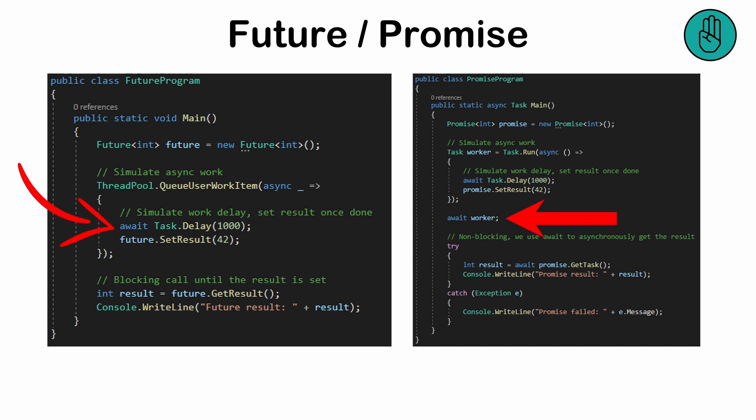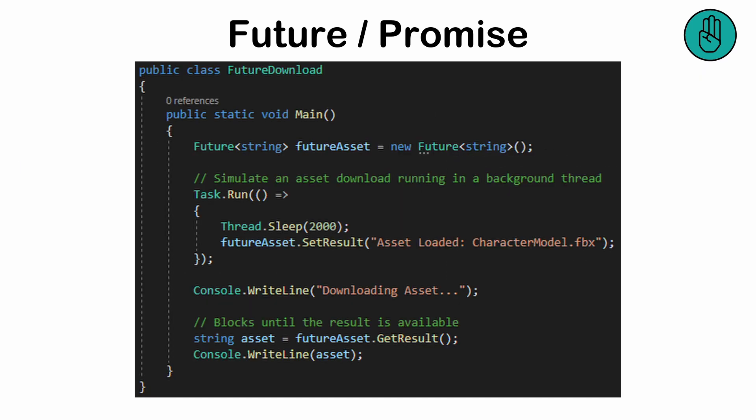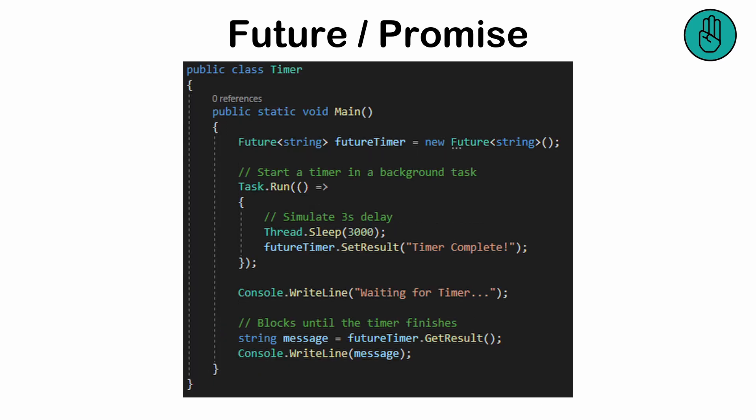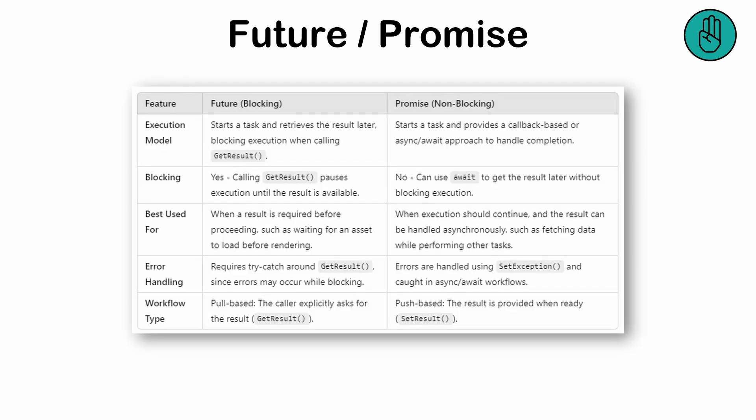This pattern is particularly powerful when combined with async/await, enabling clean, non-blocking code for asynchronous tasks like downloading assets, fetching APIs, or managing timers. Improper use can cause deadlocks. Asynchronous operations make stacks harder to trace, and thus can make error detection more difficult.